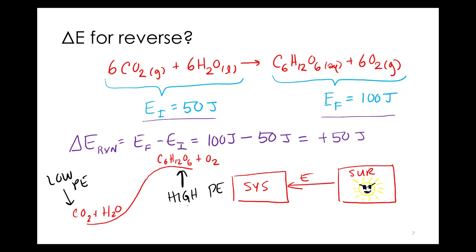Reactions can go uphill or downhill. Going back to the ball rolling downhill — can we get the ball back up to the top of the hill? Yes, but it takes energy. You have to put energy into the system to get it back up to a higher potential energy state. Reactions can go from high potential energy to low, or low to high. But if you're going from low potential energy to high potential energy, you need to get energy from somewhere — the energy from the surroundings is needed for that to happen.